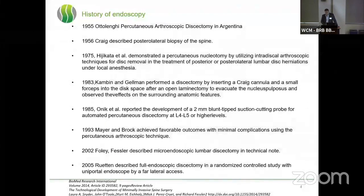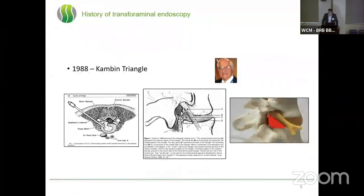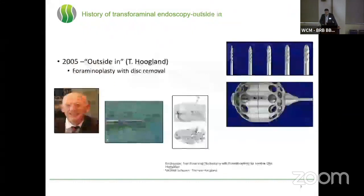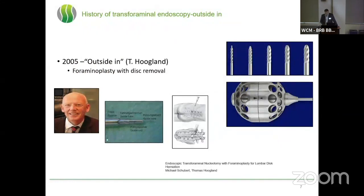In 1988, Kambin was the first to describe the anatomy of the Kambin triangle, and he did some percutaneous discectomies. We have Tony Young here in the States, who was a pioneer with the so-called inside-out technique using one of his first endoscopes — the YESS endoscope. We have Thomas Hoogland, who has since deceased, but was a big fan of doing a foraminoplasty and combining decompression and discectomy with the scope using special bone drills.